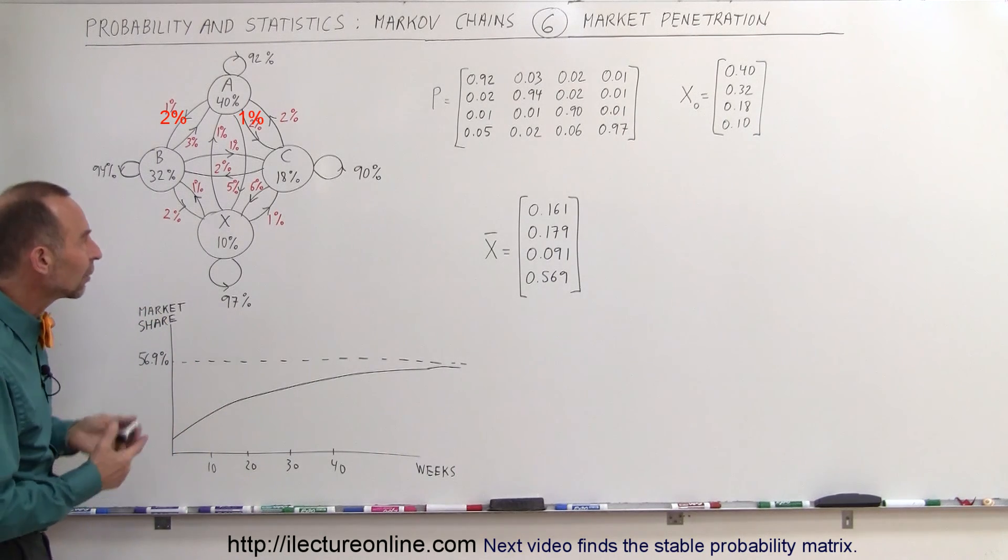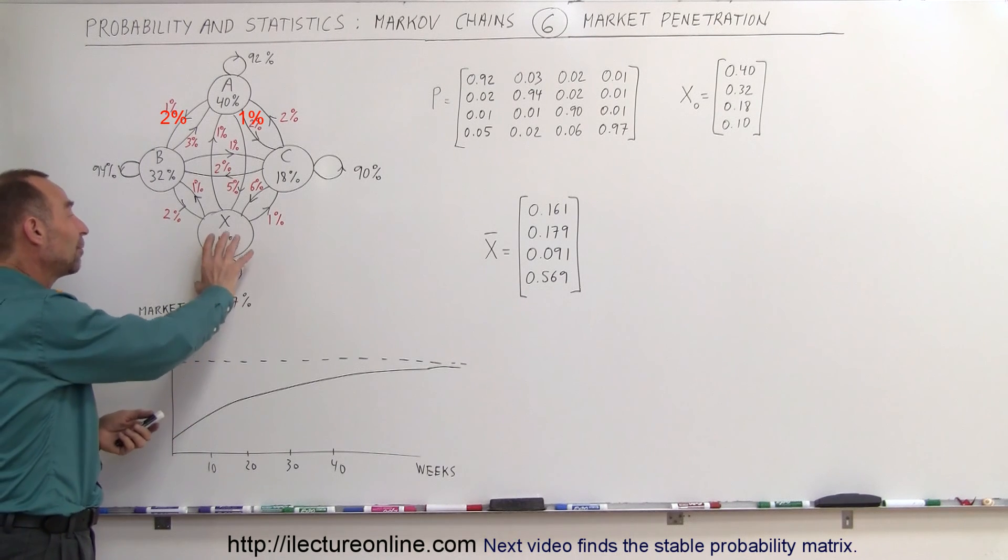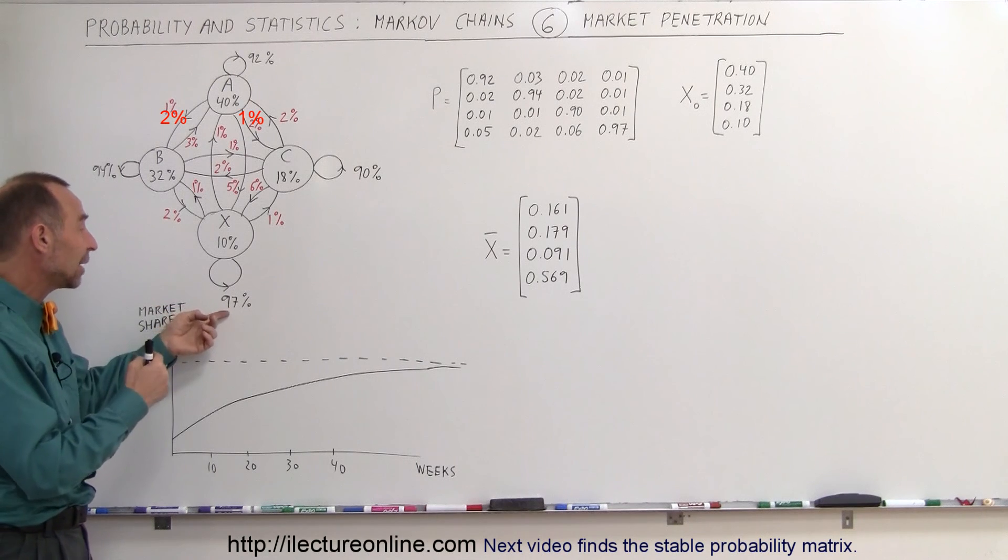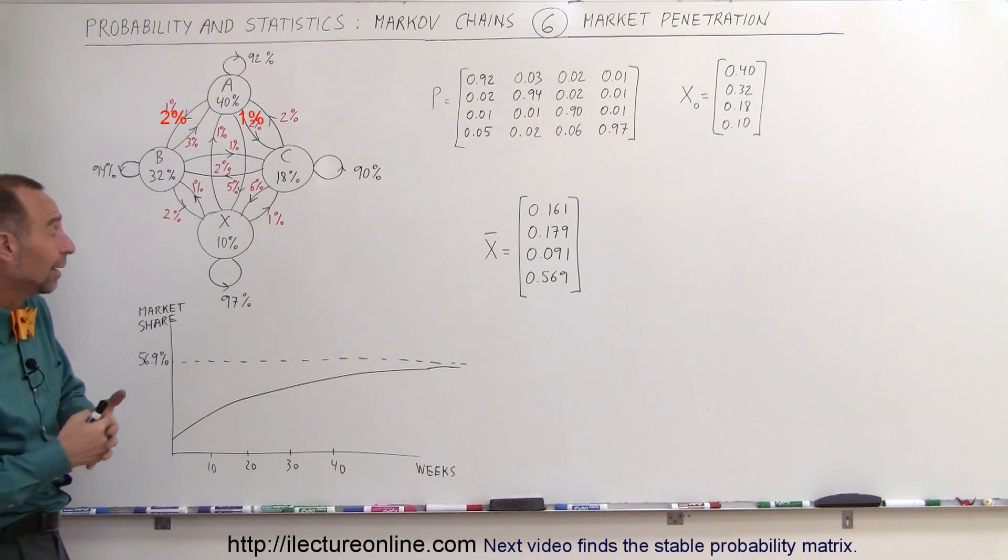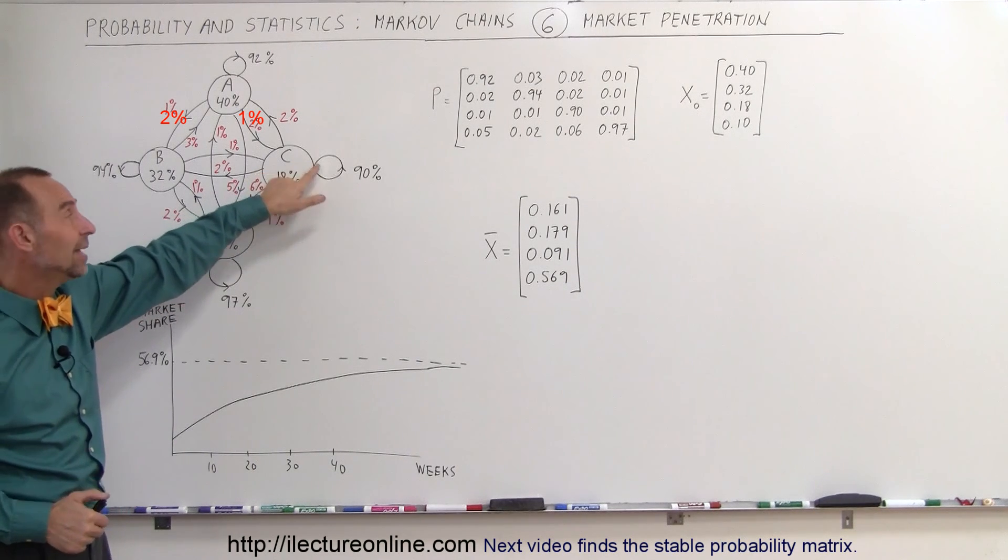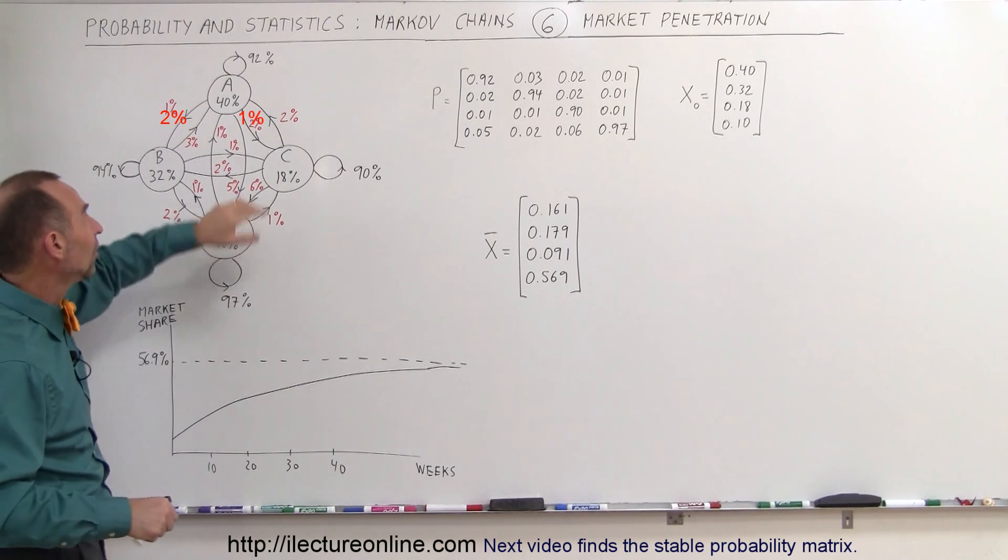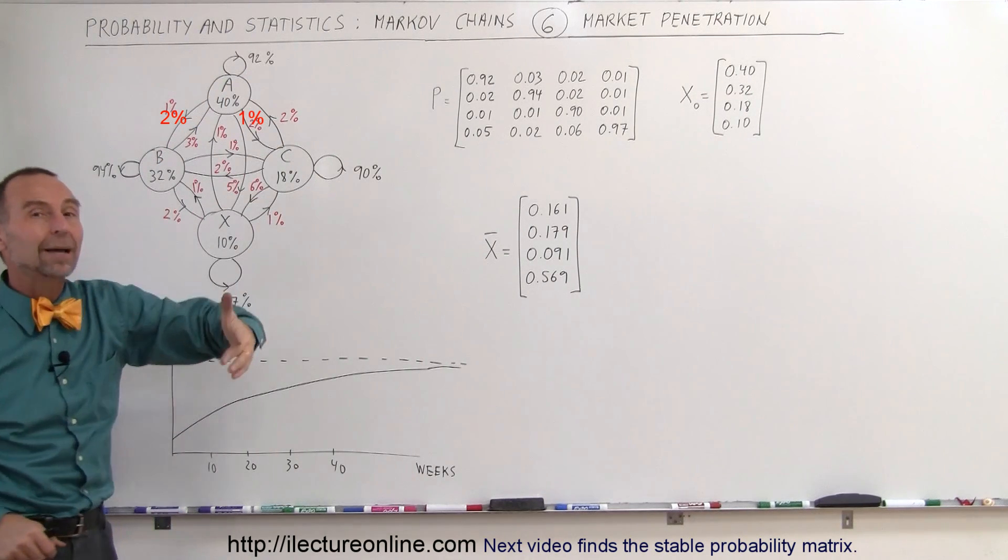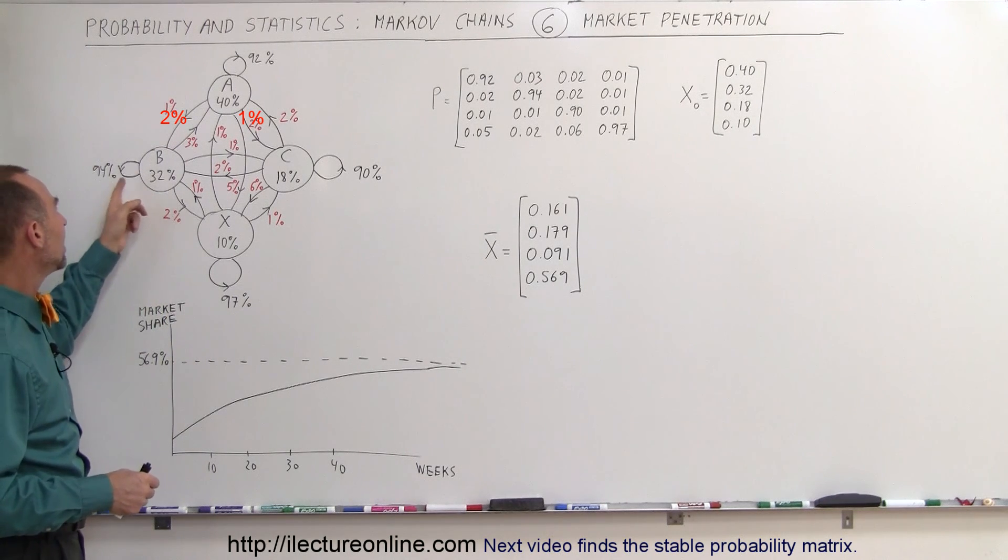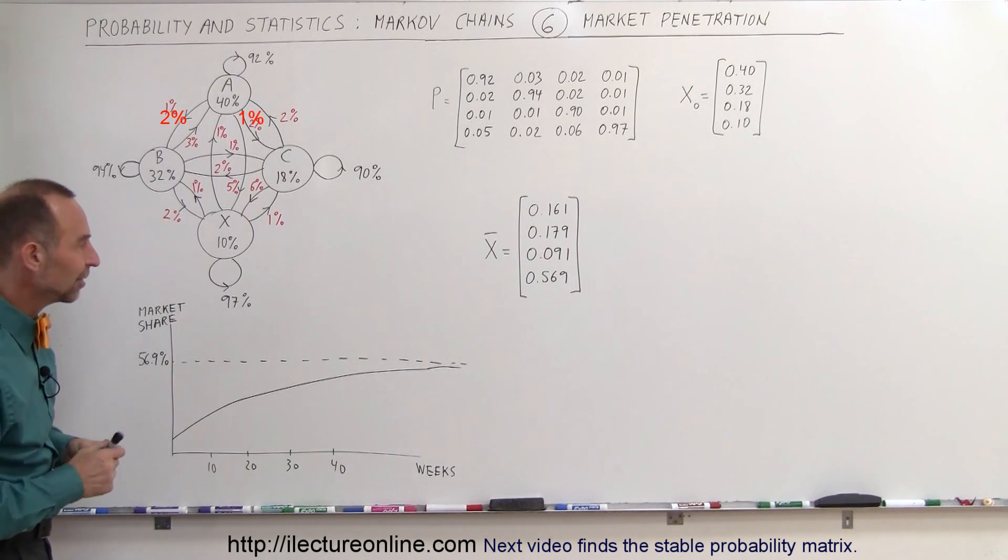So we do an analysis of the market and see the loyalty to each brand. Notice that 97% of people who buy brand X go back to the store and buy brand X again. Only 90% of customers who buy brand C continue to buy brand C; the other 10% will try another brand. For brand A, 92% will re-buy brand A, and for brand B, 94% will buy the same brand, while 6% will try another brand.